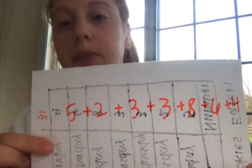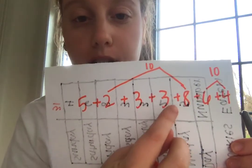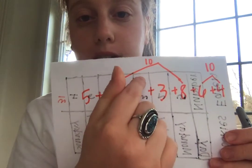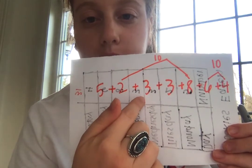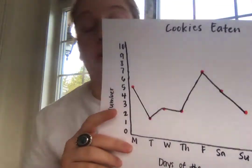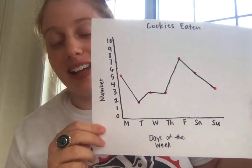The first thing I'm going to do is group in tens. I know that six plus four equals ten. I know that eight and two equals ten. And then we have three and three and five left. So I'm going to count: 10, 20, 25, 26, 27, 28, 29, 30, 31. That tells me I ate 31 cookies in all throughout last week.